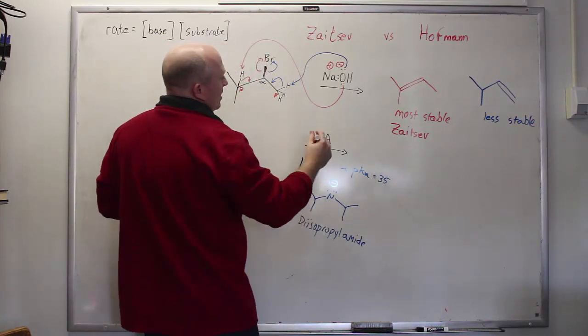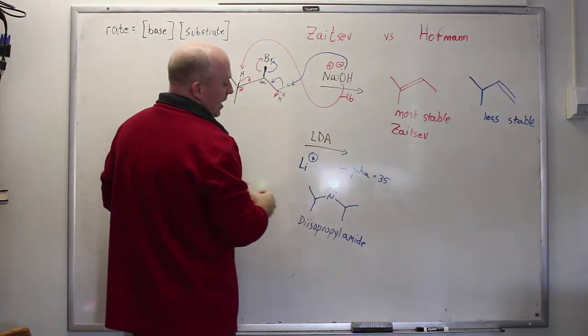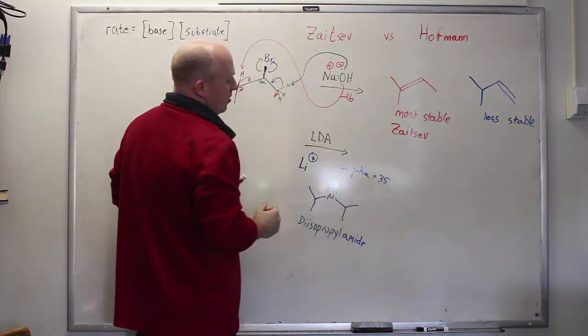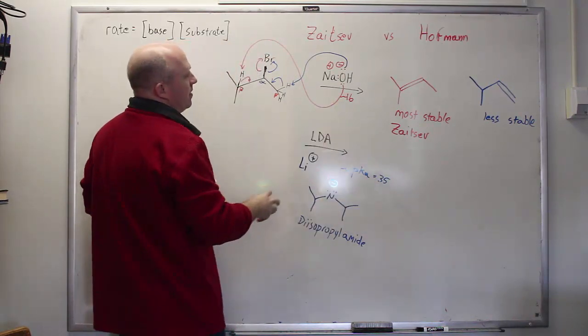What's the pKa for hydroxide? Well, it's essentially that of water. So the pKa here is about 16. Said another way, this is dramatically stronger as a base, almost 10 to the 20th stronger as a base than hydroxide.